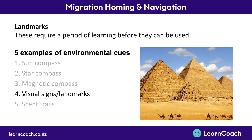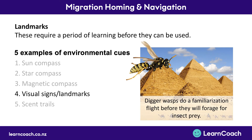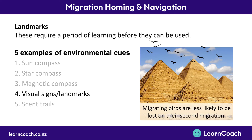Next is visual signs and landmarks — people use these all the time, like turning right at the shop with the big red sign. These require learning before they can be used. For example, digger wasps fly around and get familiar with their environment before going out to look for prey. Birds are also less likely to get lost on their second migration because the first time they learn common landmarks, and the second time they spot the same landmarks and know they're going the right direction.